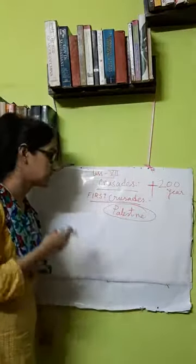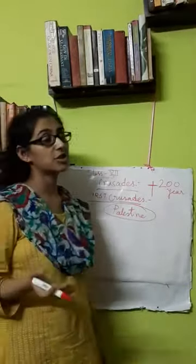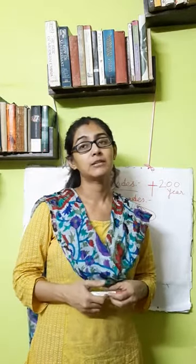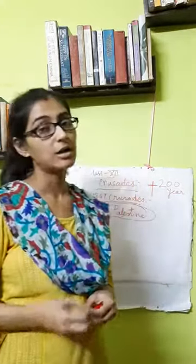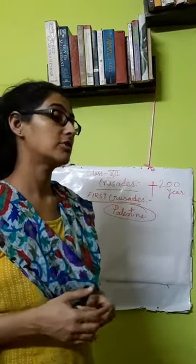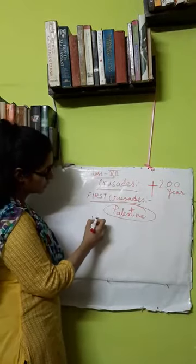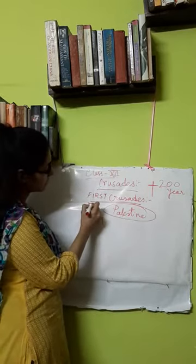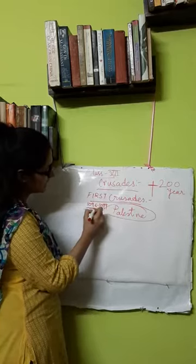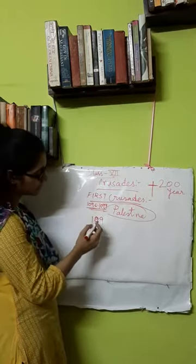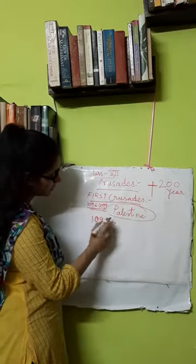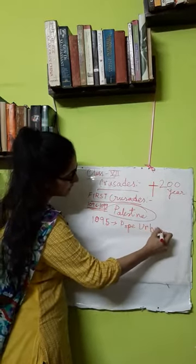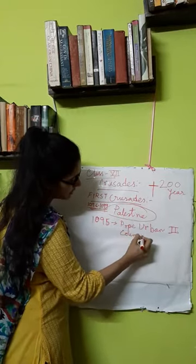The main cause for the first crusade was that the Turkish Muslims had captured Palestine and were not allowing Christians to enter for their pilgrimage. Every time the Christians tried to enter Palestine, the Turkish Muslims would kill or torture them. The first crusade started in 1096, and in 1095, Pope Urban II gave the call from the Council of Claremont.